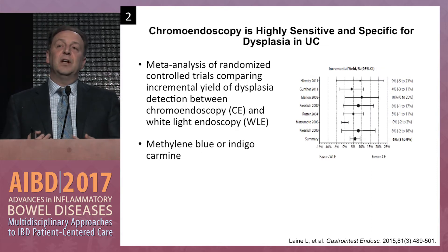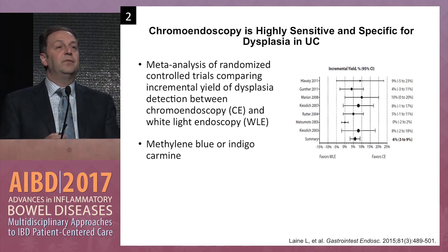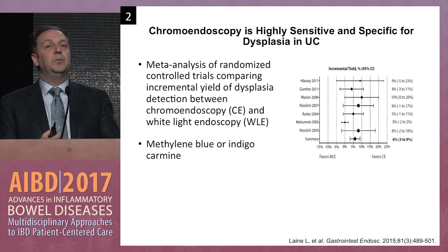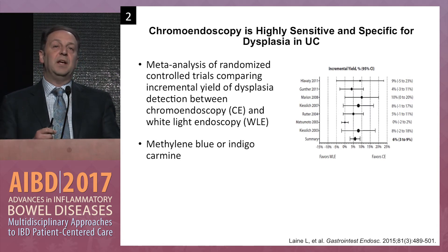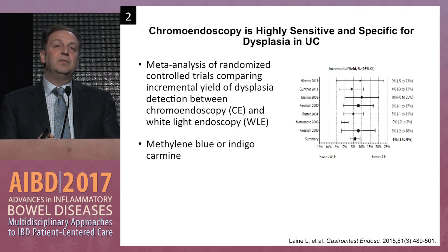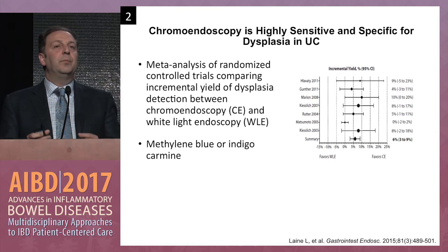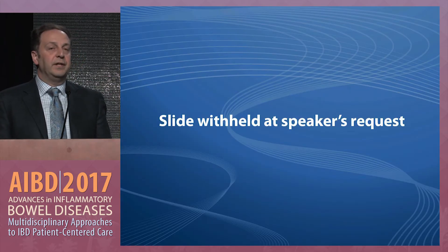How do we detect subtle lesions? One approach is chromoendoscopy — different from virtual chromoendoscopy in that it involves application of a dye spray, either indigo carmine or methylene blue, onto the colonic mucosa. There's about a two to five-fold increased relative detection rate, representing a couple percentage point increased risk of finding dysplasia. I'll talk about the finer points of chromoendoscopy, including a video.